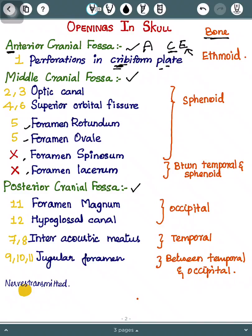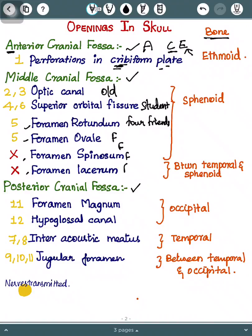We can remember this by the mnemonic: 'Old Students Are Four Friends.' The first friend is rotundum, the second friend is ovale, the third friend is spinosum, and the fourth friend is lacerum.